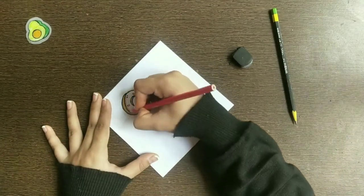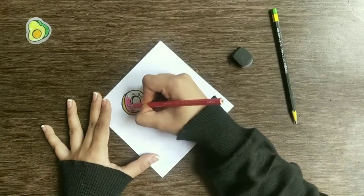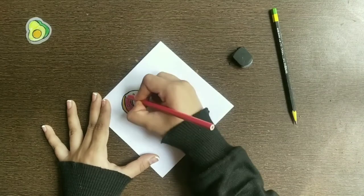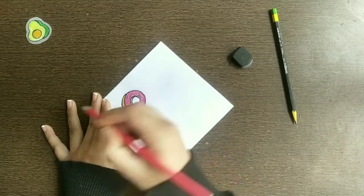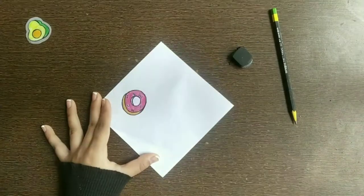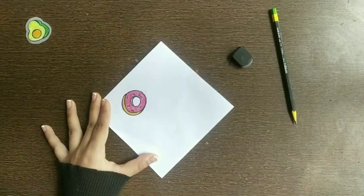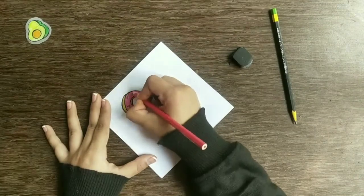I am coloring the donut pink because I like strawberry flavor and those little dots are the sprinkles. For the sprinkles I am using random colors. I don't know why it is not looking like a donut but it is a donut.